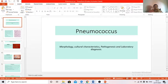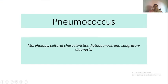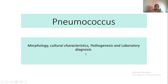Hello students, today we will discuss about pneumococcus or Streptococcus pneumoniae. You must have heard about this organism very frequently. Streptococcus pneumoniae is a capsulated gram-positive cocci arranged in pairs, also known as diplococcus. In this video we will discuss the morphology, cultural characteristics, pathogenesis, and lab diagnosis of Streptococcus pneumoniae.